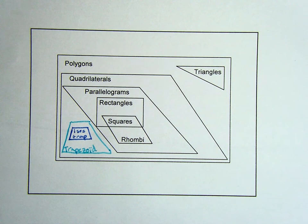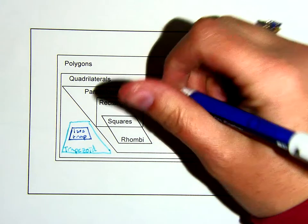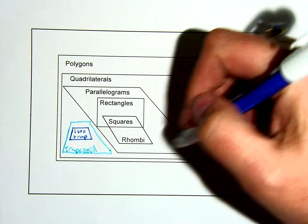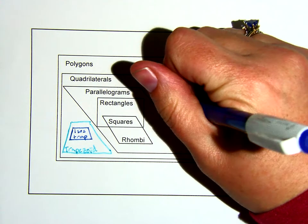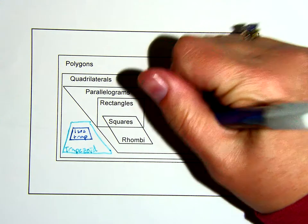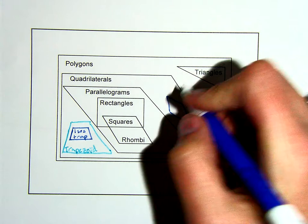Our kites, they again are quadrilaterals, but they are not parallelograms. So they are inside the quadrilaterals, but not inside parallelograms. So they're over here. You can put them over here. And these are our kites.